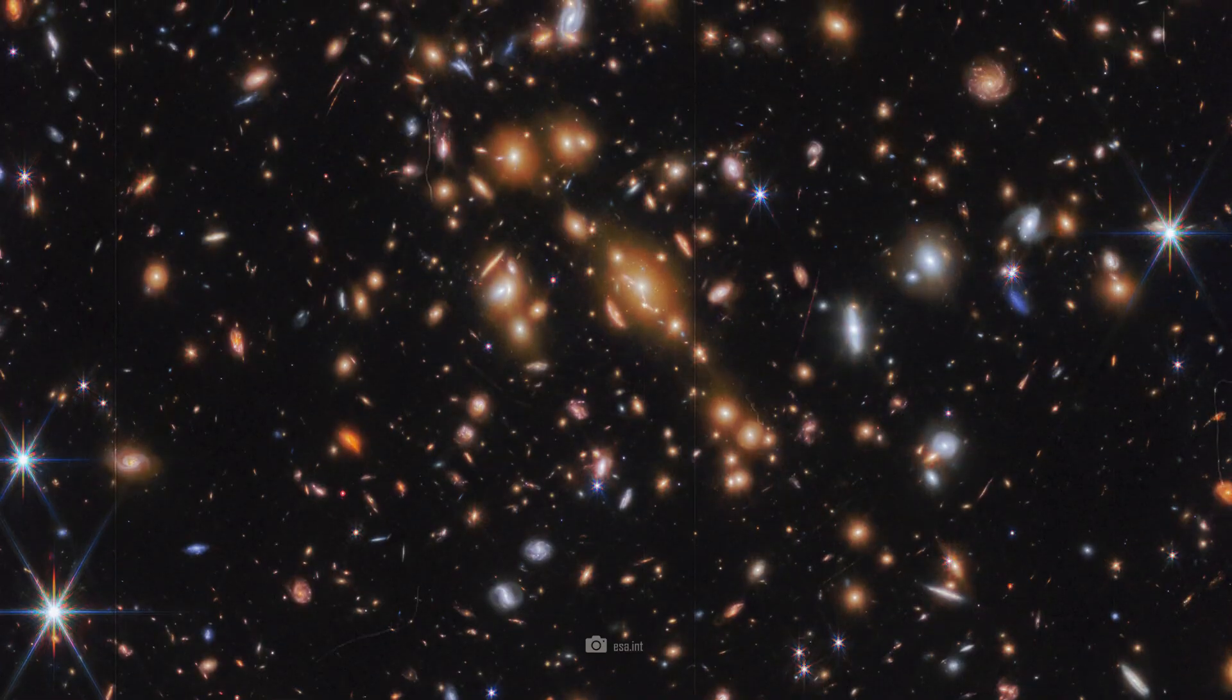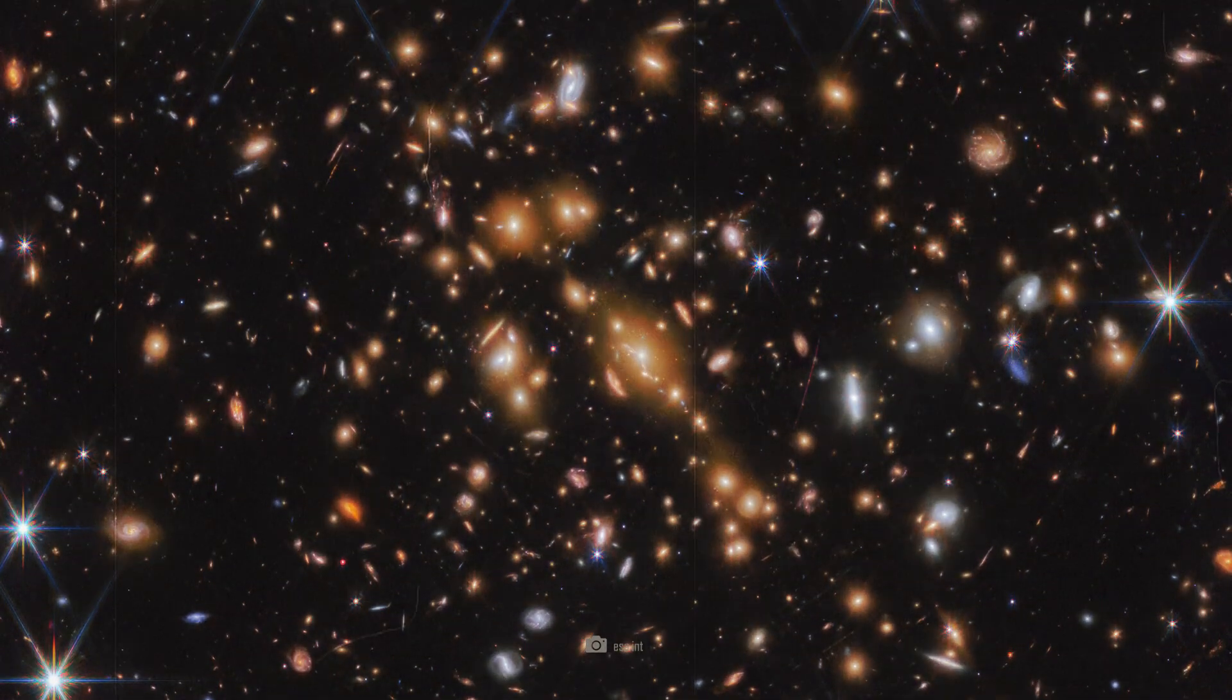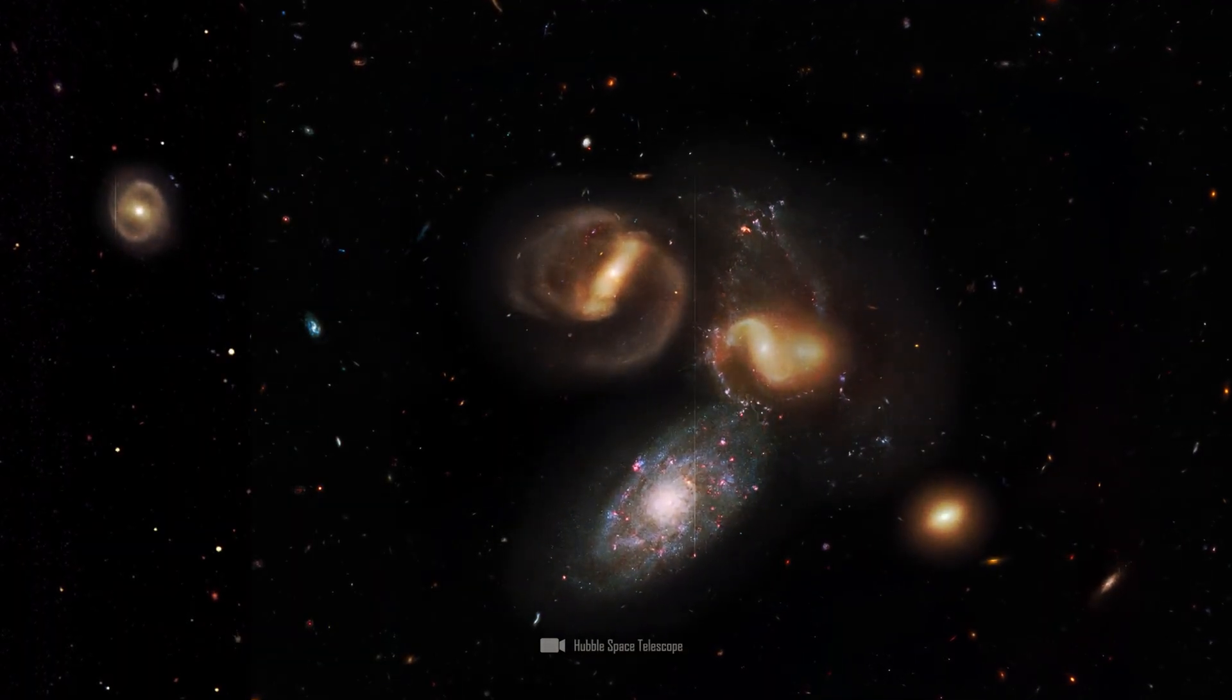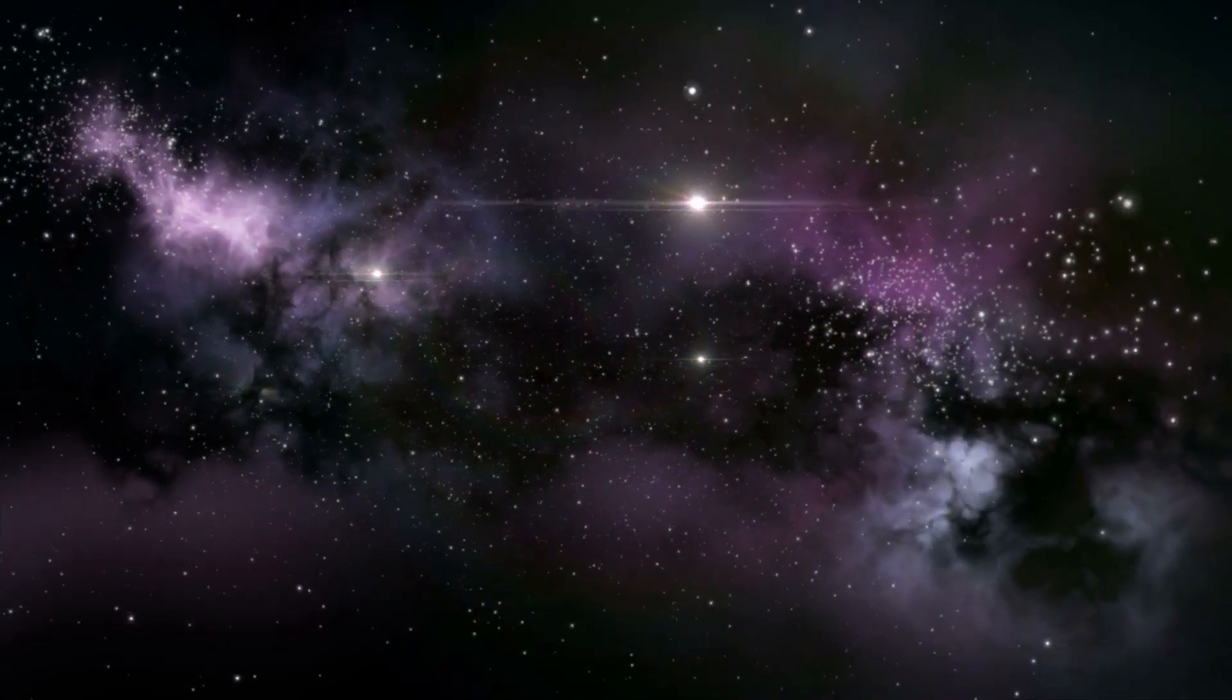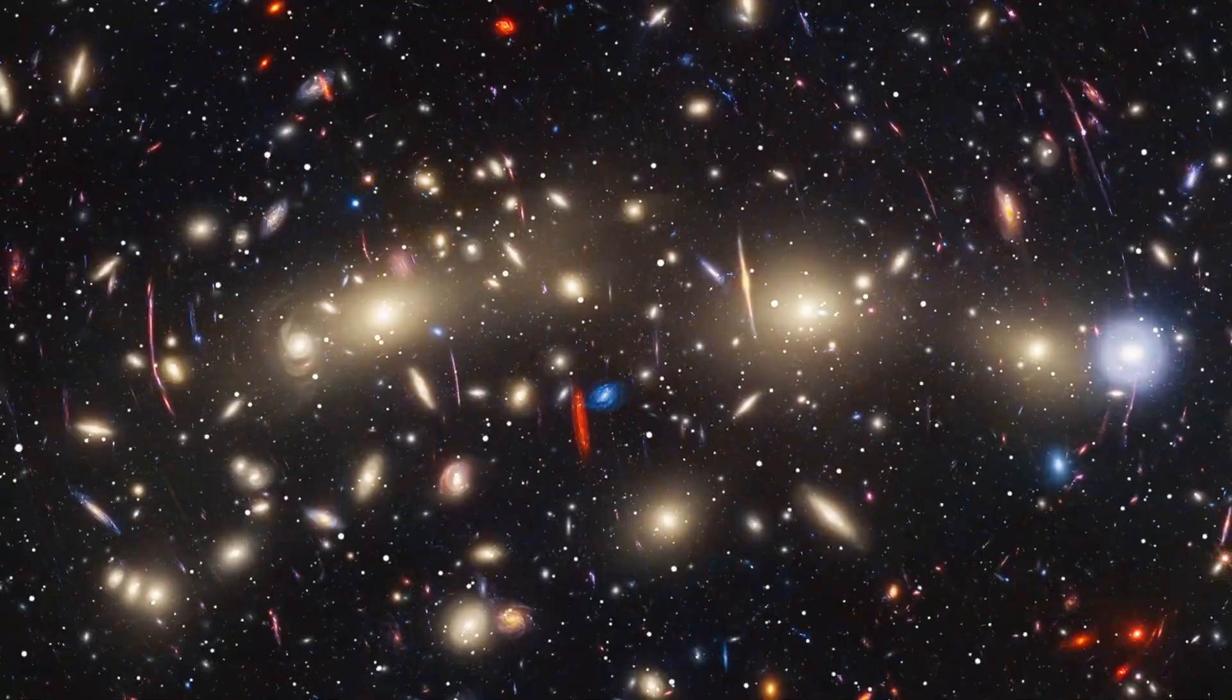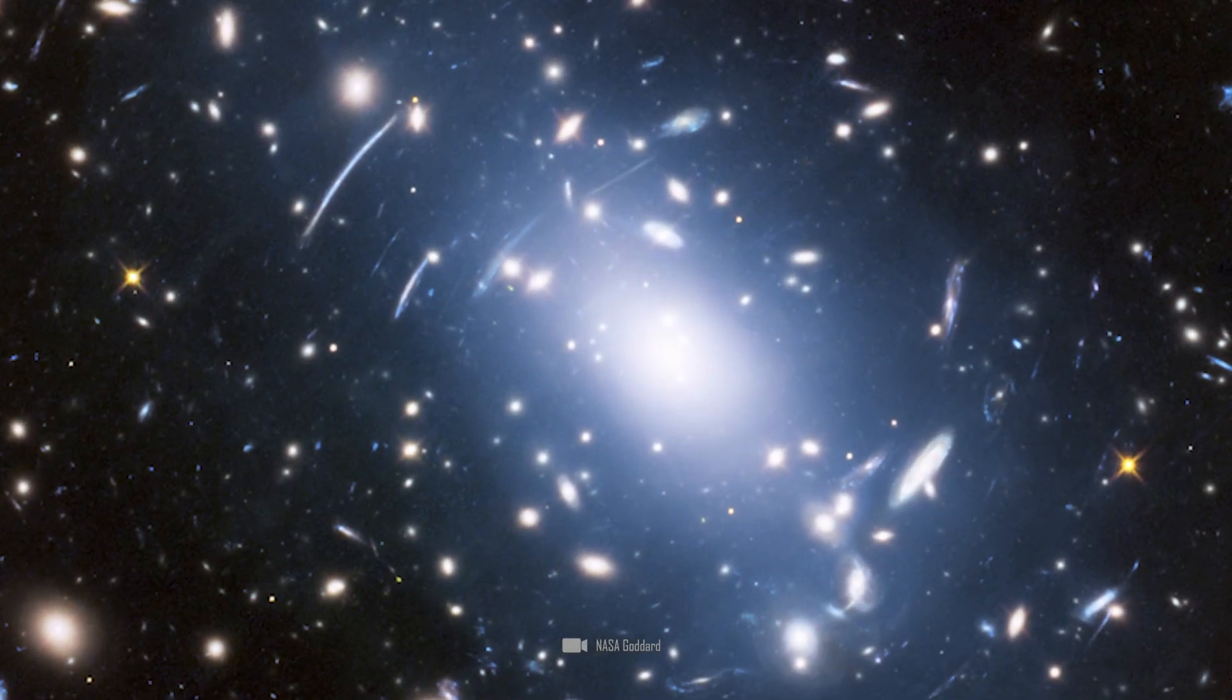The upstream galaxy cluster SPT-CL J0615-5746, which is itself around 4 billion years old and contains thousands of galaxies, acted as a gravitational lens. It stretches over several million light-years, which makes it clear why this cluster has such an immense size and gravitational force.